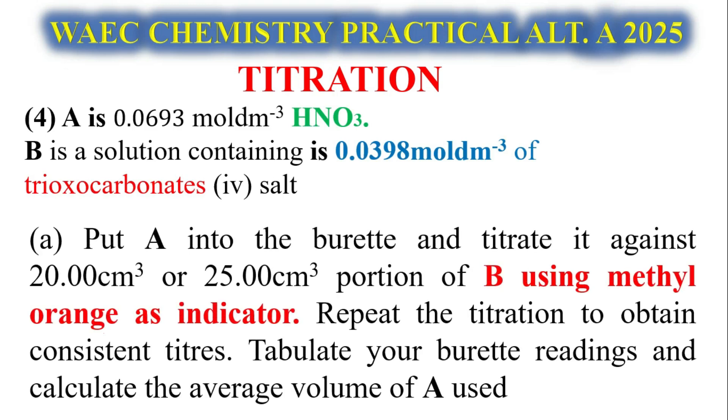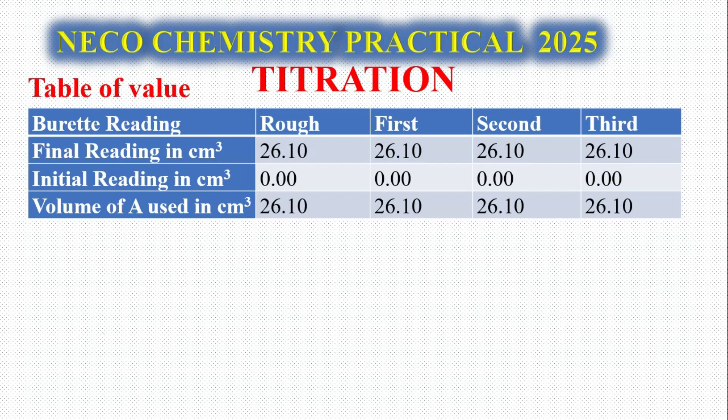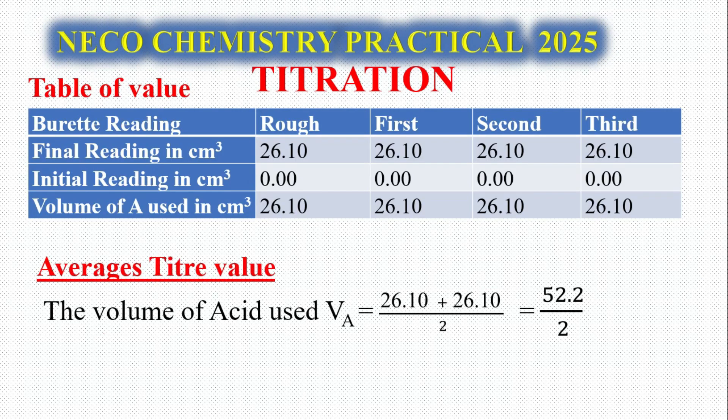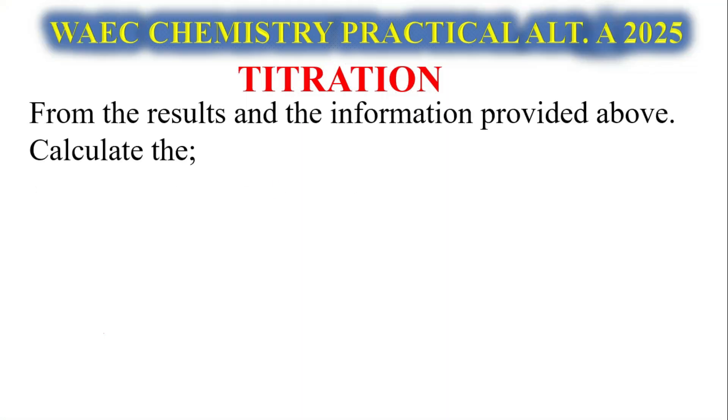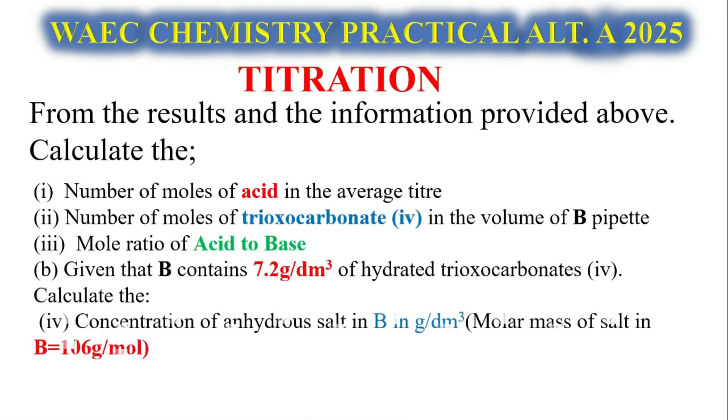Let's look at the last question. A is a solution of 0.0693 mol per dm³ of HNO3, while B is a solution containing 0.0398 mol per dm³ of trioxocarbonate four. There's no specificity of the type of carbonate four here, whether it's K2CO3 or Na2CO3. We don't actually know our base in this question. Same procedure, using the same titre value 26.10.